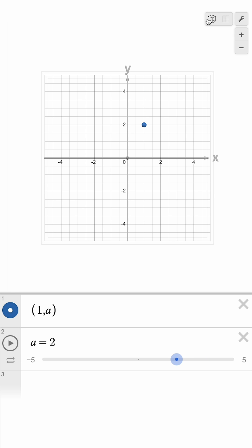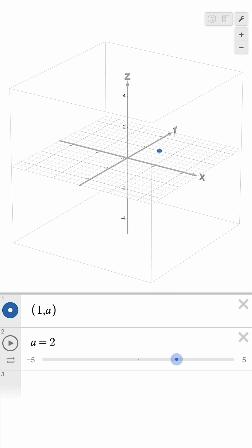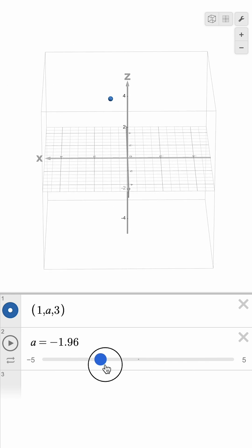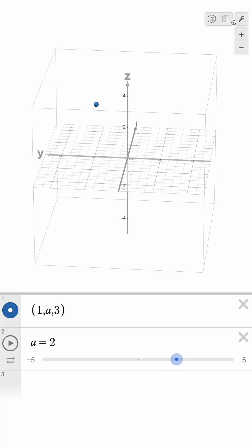Let's reorient our screen back to the default three-dimensional view and add a z component to our point, like z equals 3. We can drag and rotate our cube to see how the point is now 3 units above the xy plane. We can still use our slider to adjust the y coordinate of our point.